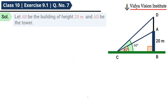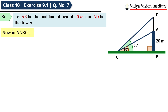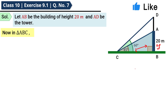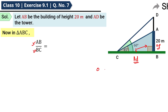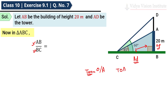Now let AB be the building of height 20 meter and AD be the tower. Now in triangle ABC, AB जो है वो 45 degree के opposite side है और BC 45 degree से adjacent side है। Therefore AB upon BC is equal to tan 45 degree — tan is opposite upon adjacent. AB upon BC equals tan 45 degree, और AB की value हमें पता है — that is 20 meter।